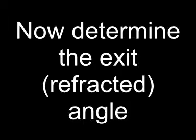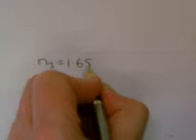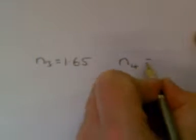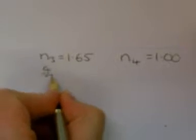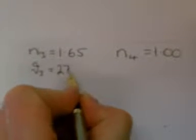At this boundary, I am going to call glass material 3 and air material 4. This means N3 equals 1.65, theta 3 equals 27.7 degrees, N4 equals 1, theta 4 equals question mark.